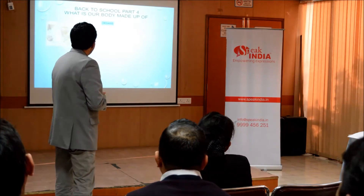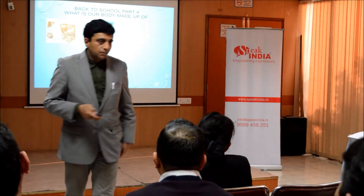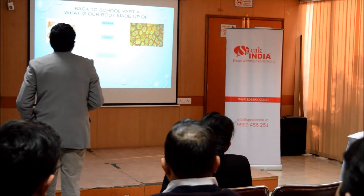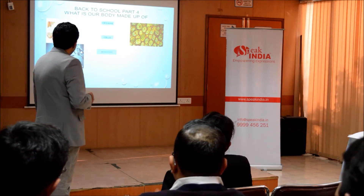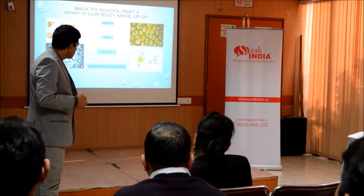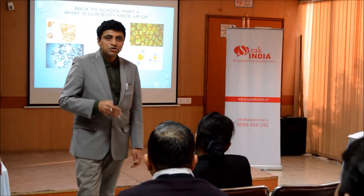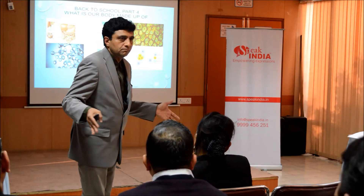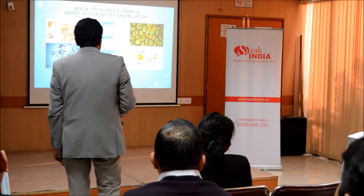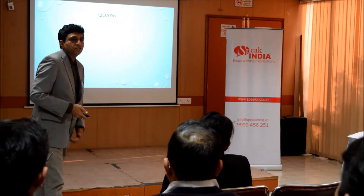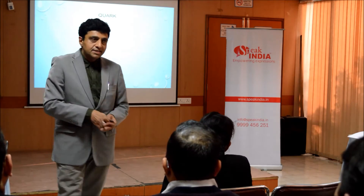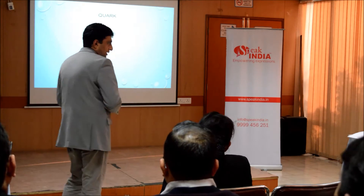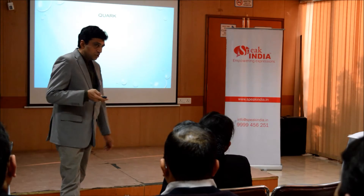Back to school part 4 — what is our body made up of? This is biology. The body is made up of organs; organs are made up of cells; cells are made up of molecules; molecules are made up of atoms, which are electrons, neutrons, and protons. What are electrons, neutrons, and protons made up of? Scientists found out this is called a quark — the smallest particle in the universe.